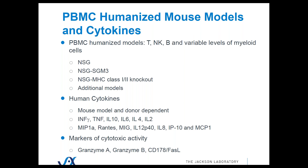So we've got interferon gamma, TNF, IL-10, IL-6, IL-4, and IL-2 as our standard panel, but we also get induction of MIP-1-alpha, Rantes, MIG-1, IL-12 P-40, IL-8, IP-10, MCP-1, and so on. And we also get the markers granzyme A, B, and Fas ligand.